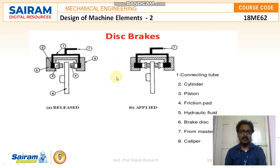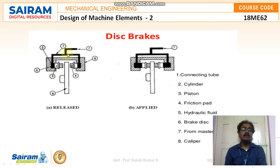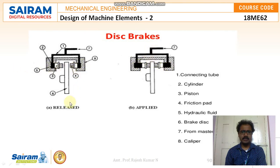Moving to disc brakes — you can see all the parts here. Number one is the dark-colored pipe, which is the connecting tube. Number two is the cylinder. You can see both the connecting tube and cylinder on both sides — in the released and applied cases. Number three is the piston, shown as the white block.